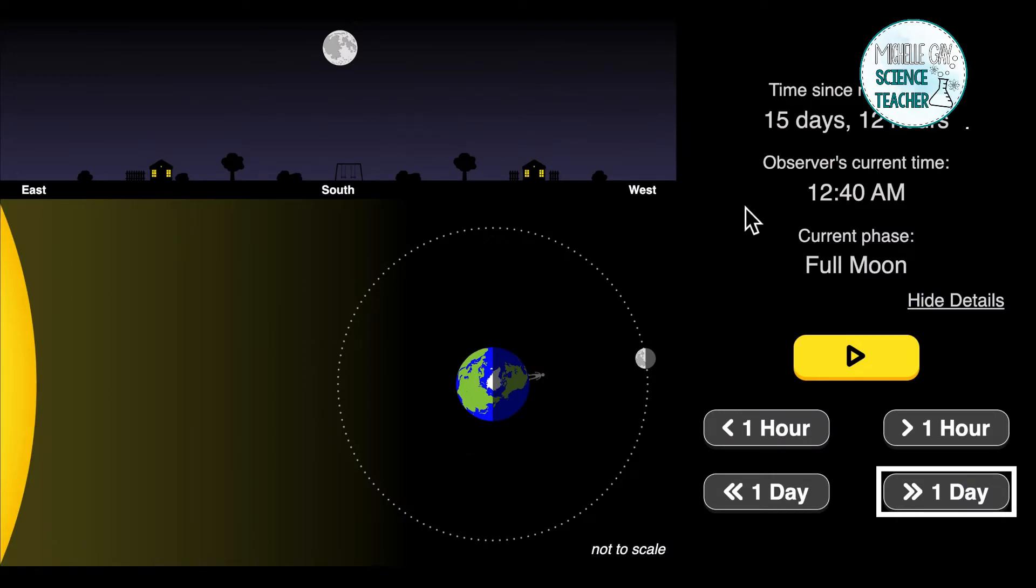As we look at this demonstration, we can see Earth, the moon, and the sun. The moon will orbit the Earth. Over here it will show the number of days and hours it has been orbiting. So far it has been orbiting 15 days and 12 hours, and we have a full moon that we can see.